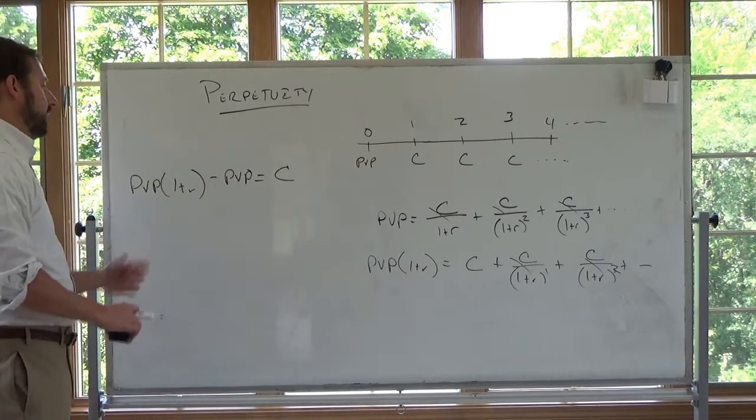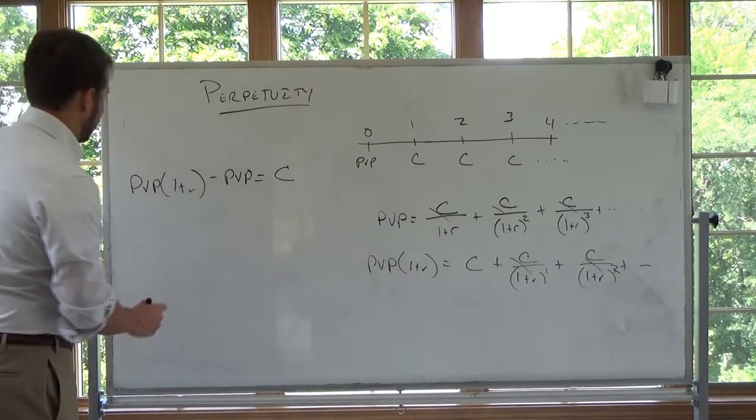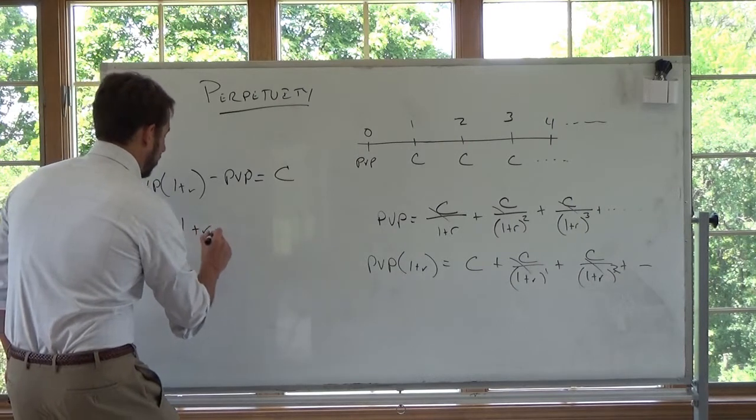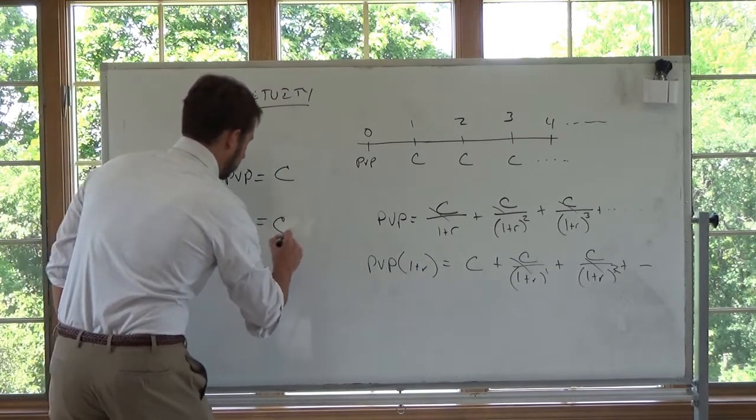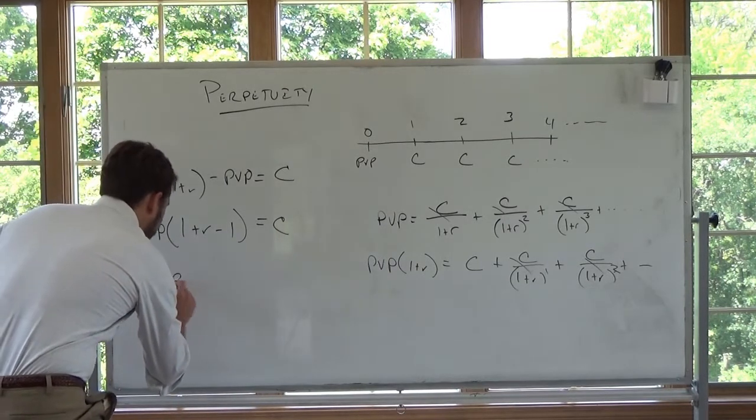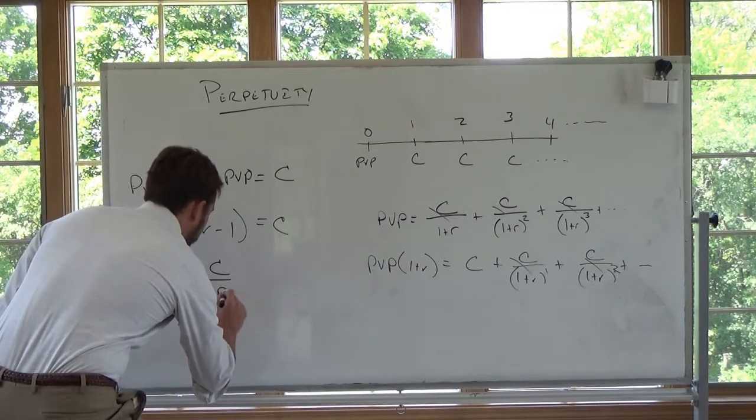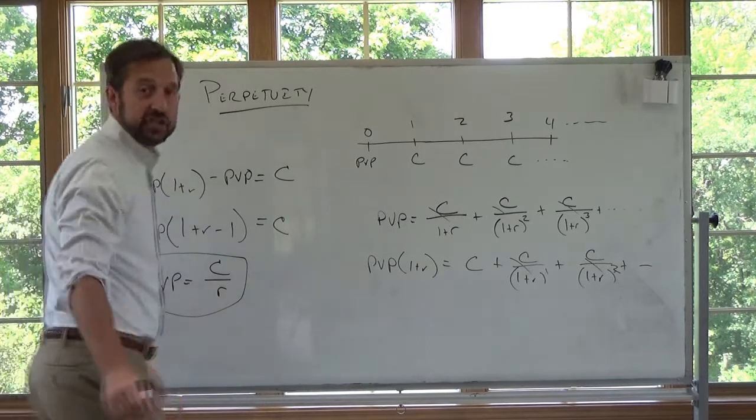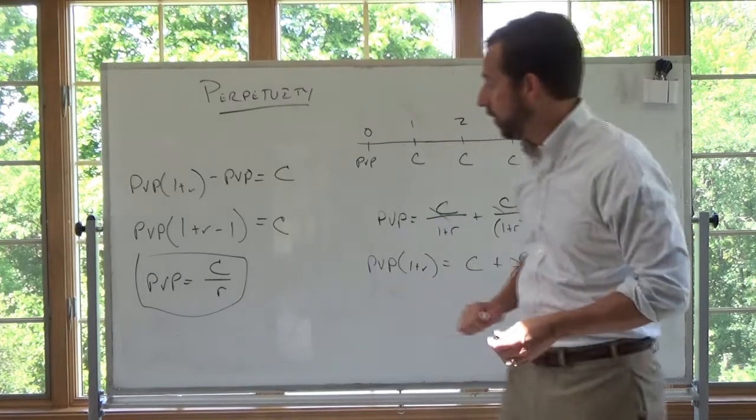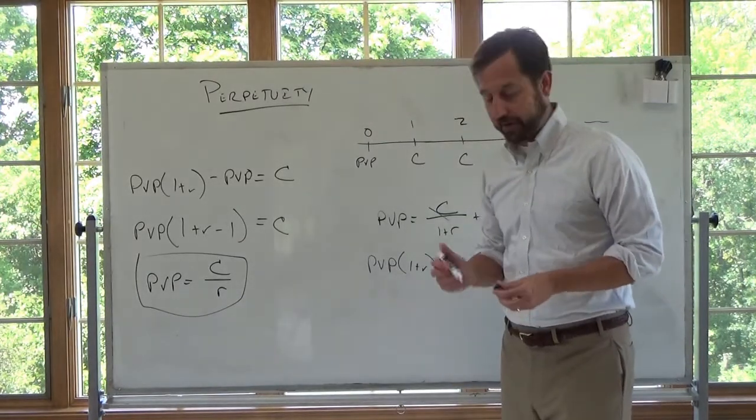Once I have that, I can factor out the present value of perpetuity. So this is present value of perpetuity, 1 plus R minus 1 is equal to the cash flow per period. Then we get the present value of perpetuity is equal to C divided by R. So the easiest formula in this course. The present value of perpetuity is just the cash flow per period divided by the rate per period.